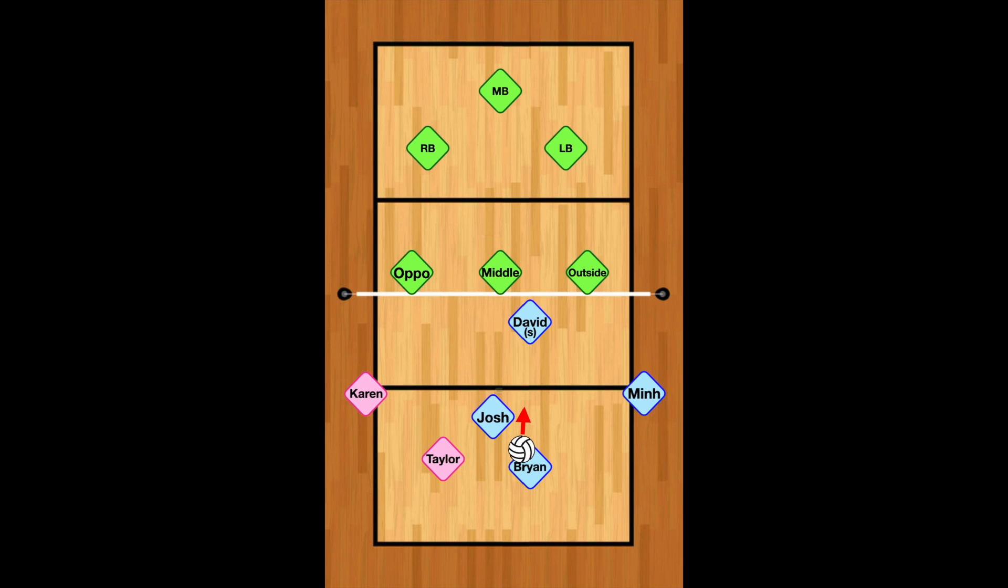Brian's going to pass and then Josh is back in the middle back position so that he can get that approach behind the 10-foot line, so he can get ready for approach for two. Karen's out on the flank over there to the left and I'm on the right side. We are going to hit our fours and fives.